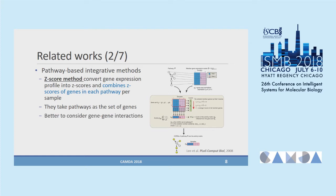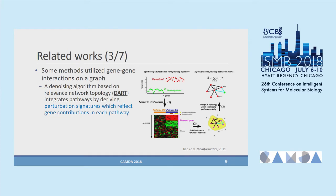We considered the idea of incorporating gene-gene interactions on a graph. A method published in Bioinformatics 2011, called DART — Denoising Algorithm based on Relevance Network Topology — utilizes perturbation signatures reflecting gene contributions to differentiate up-regulated and down-regulated genes. It builds a pruned network called the Relevance Network using these perturbation signatures, and defines pathway activation metrics based on this Relevance Network Topology to compute pathway activities per sample from a single genomic profile.